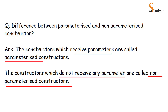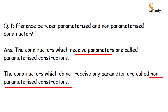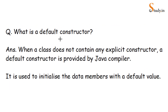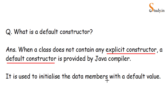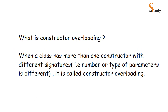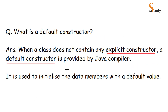What is a default constructor? When a class does not contain any explicit constructor, a default constructor is provided by the Java compiler. It is used to initialize the data members with a default value. By data members, we mean the instance variables — like in the Rectangle class, we had int l and w.